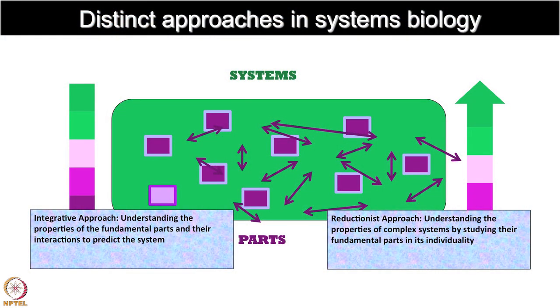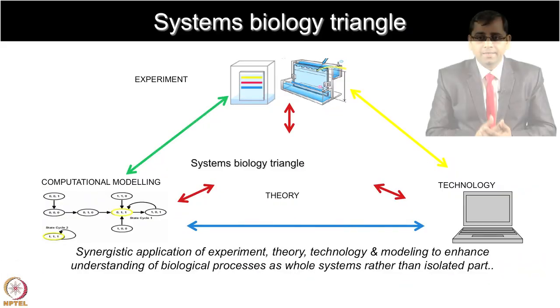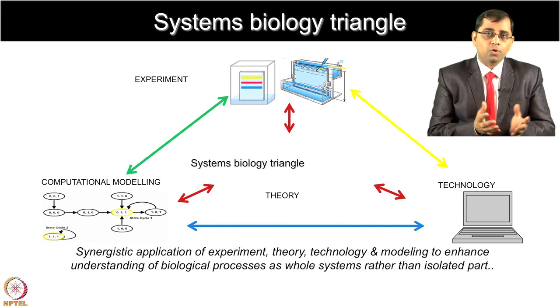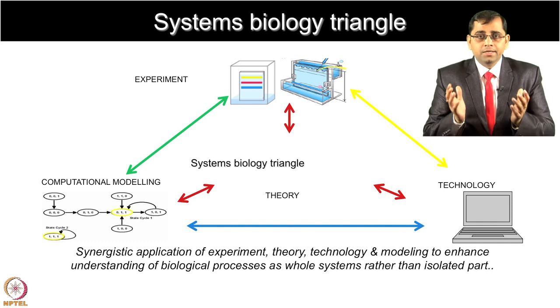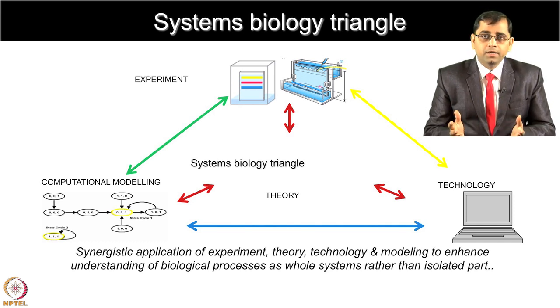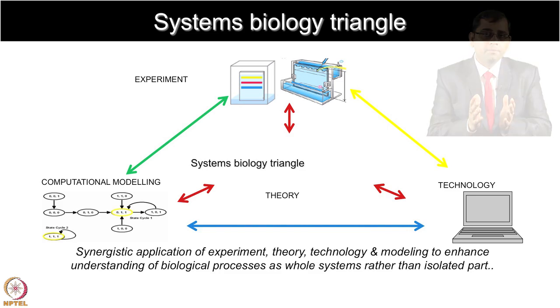There could be different ways of looking at systems biology approaches. One is the reductionist approach, which is understanding the properties of complex systems by studying their fundamental parts individually. Or it can be the integrative approach, where we want to understand the properties of fundamental parts and their interactions to predict the system. The systems biology triangle involves the experiments we do in the wet lab to generate data sets, the various technology platforms, and computational modeling — all together constituting a synergistic application of experiment, theory, technology, and modeling to enhance our understanding of biological processes as a whole system.